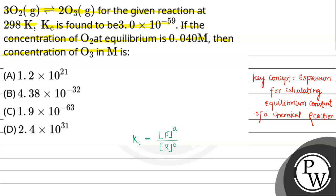Here the reaction is given as 3 O₂ (g) ⇌ 2 O₃ (g). So the expression for Kc will be: concentration of O₃ to the power 2, divided by concentration of O₂ to the power 3.